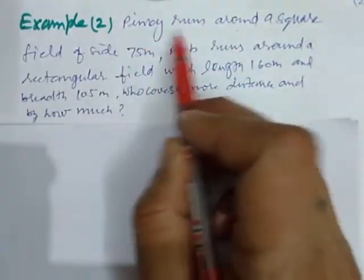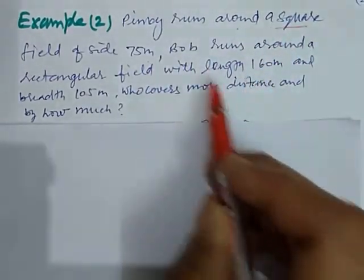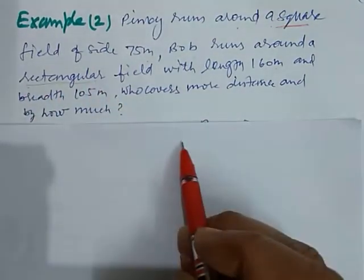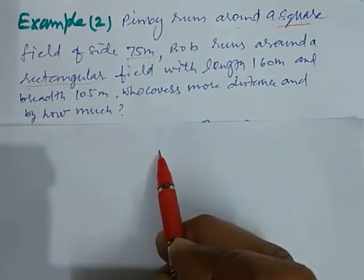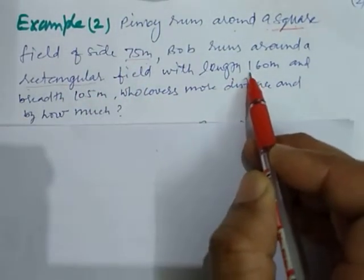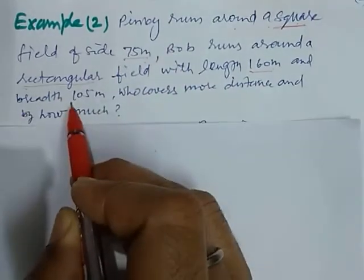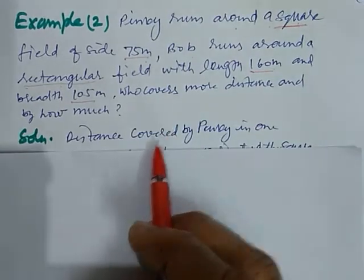Here Pinky runs around a square field and Bob runs around a rectangular field. Here the square side is 75 meter and here the rectangular field's length is 160 meter and breadth is 105 meter. So with the help of this data, we solve our problem.